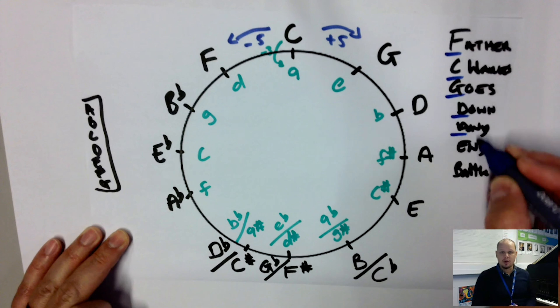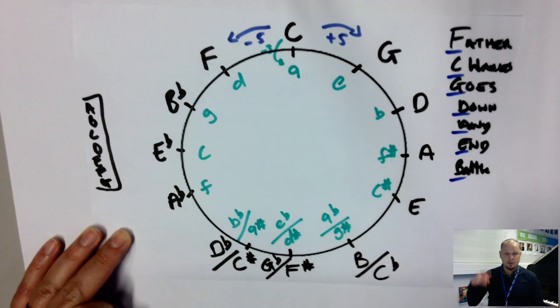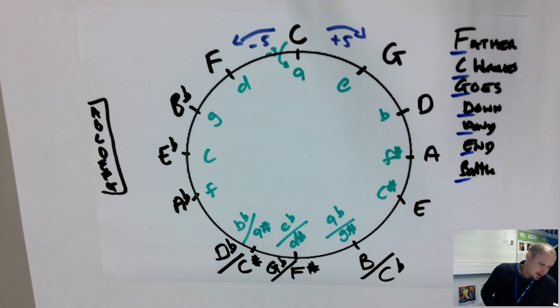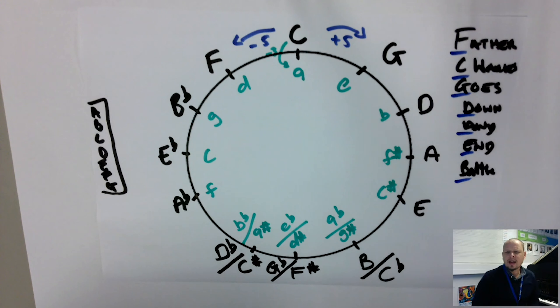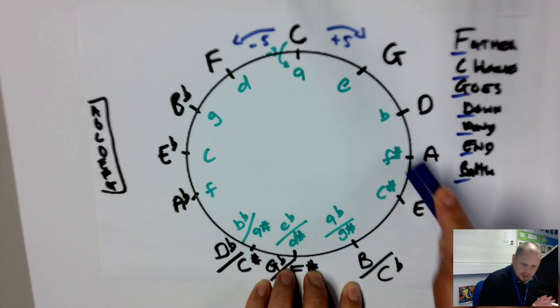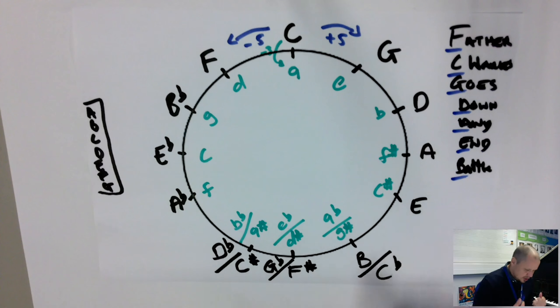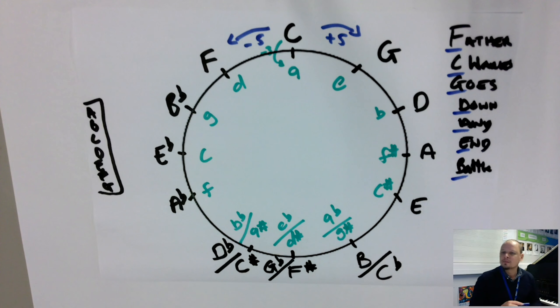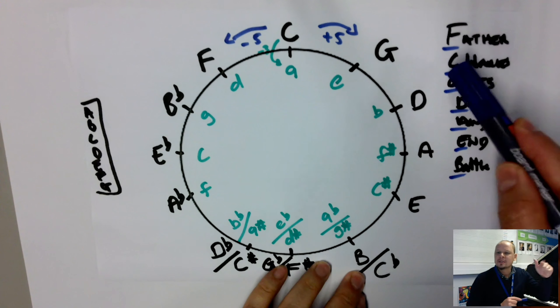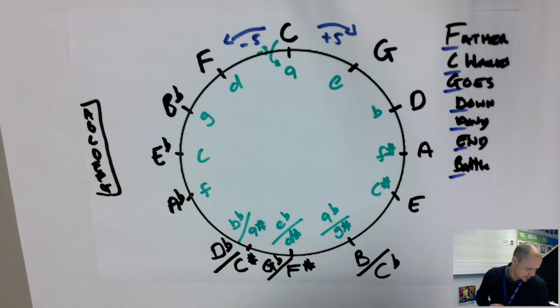Now, the wonderful thing about 'Father Charles' is we can do it in reverse, and that gives us the order of our flats. So if we look at E major, it has four sharps. What are those sharps? The key signature is F, C, G, and D — the first four letters of 'Father Charles Goes Down And Ends Battle.'